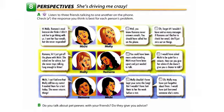Page 88, Exercise 8, Perspectives: She's driving me crazy. Part A. Listen to three friends talking to one another on the phone. Check the response you think is best for each person's problem.